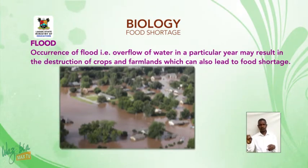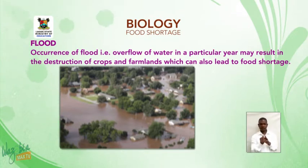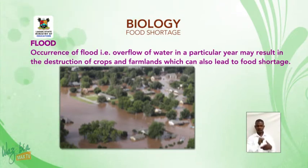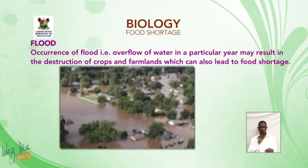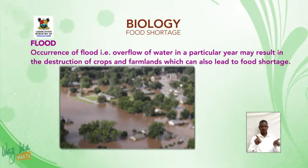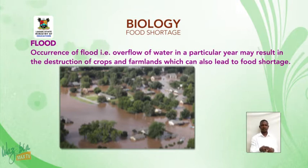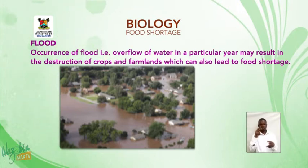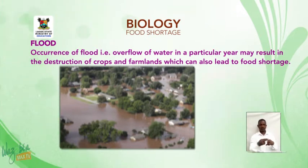Flood. The occurrence of flood — that is, overflow of water in a particular area — may result in the destruction of crops and farmlands, which can also lead to food shortage. Look at the diagram and take note of the flood.